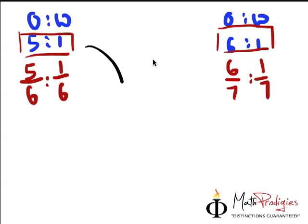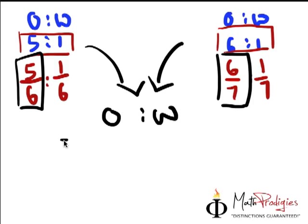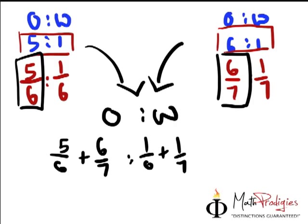So for the final oil to water, when we put this in, we just simply add it up together. Oil is here and this oil over here, we add it up together. So we get 5 over 6 plus 6 over 7 is to 1 over 6 plus 1 over 7. Now how do we do this? Simple. Next part is we just have to make the denominators common.